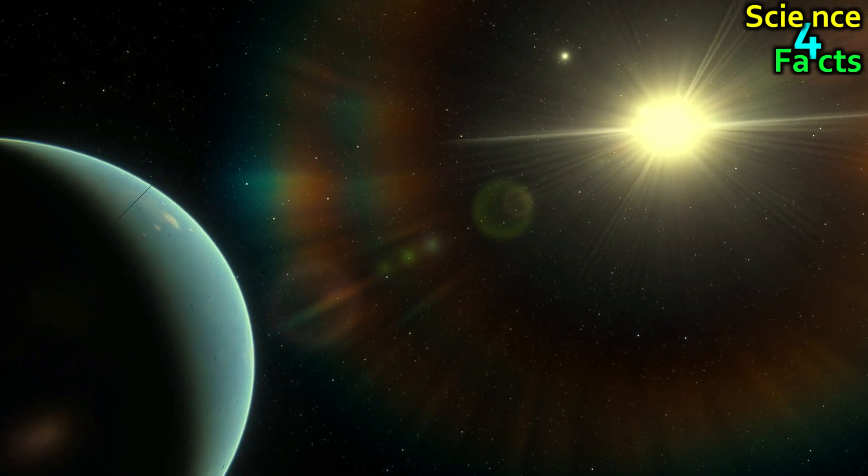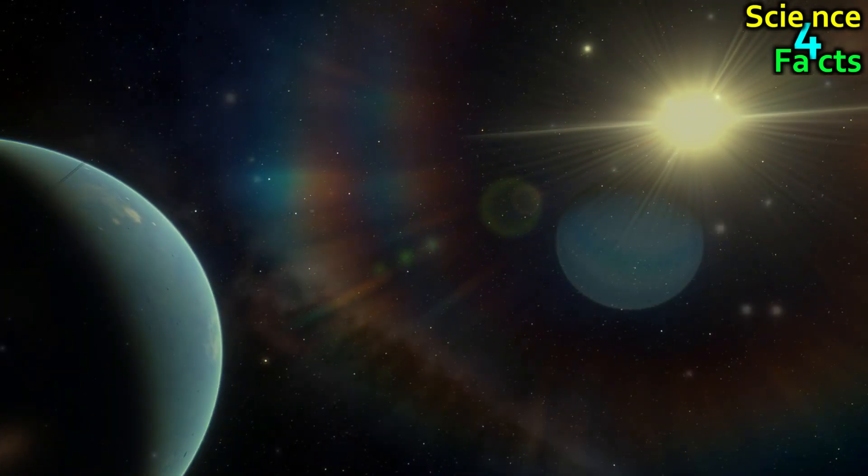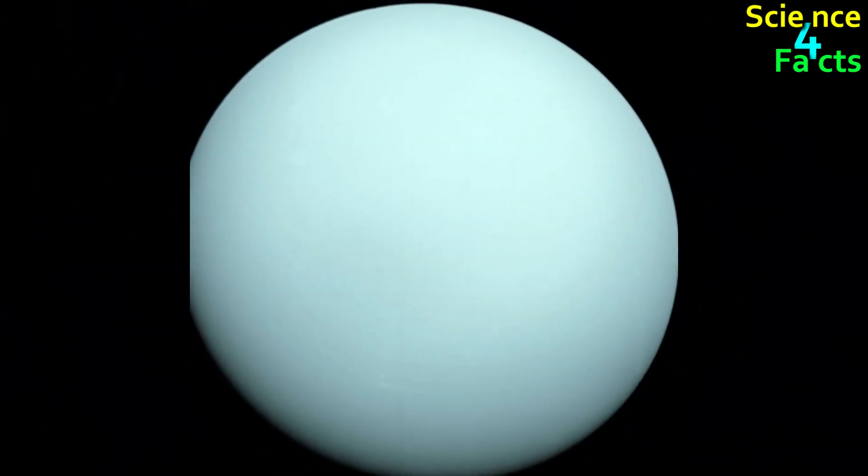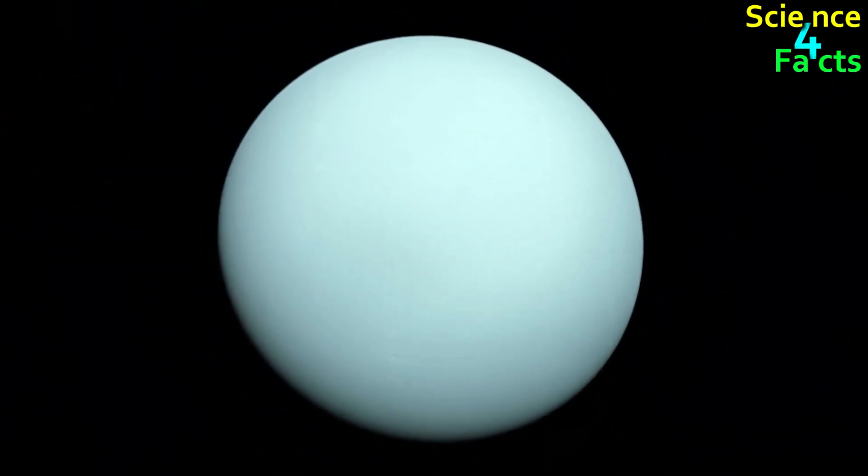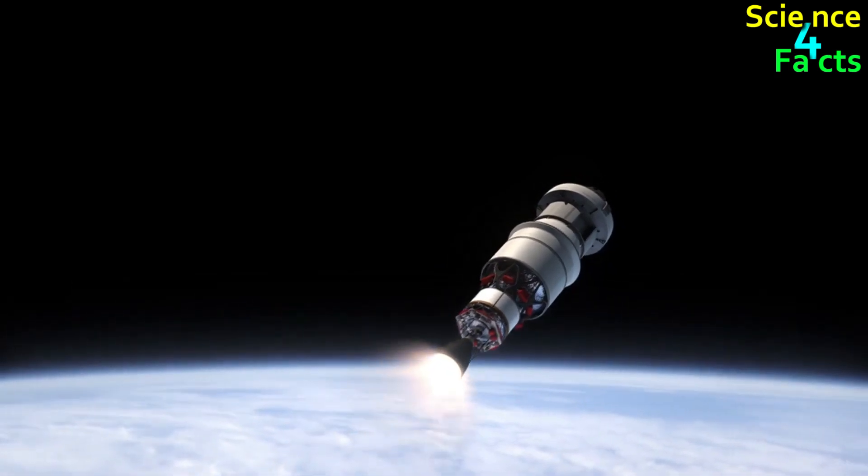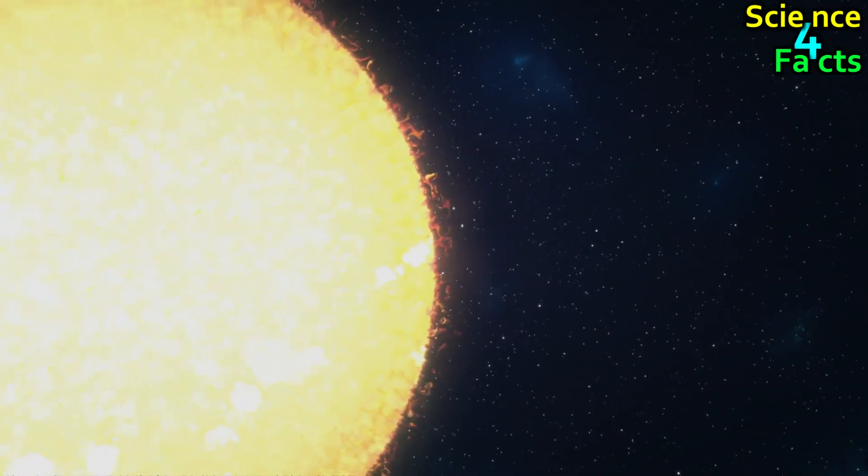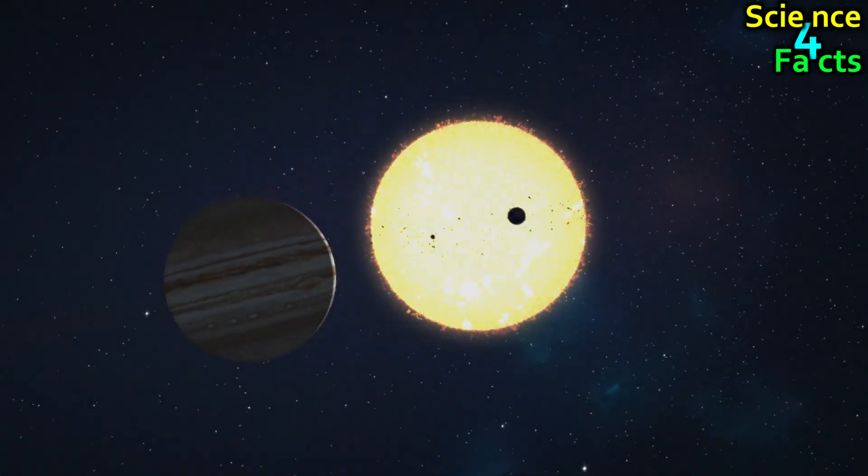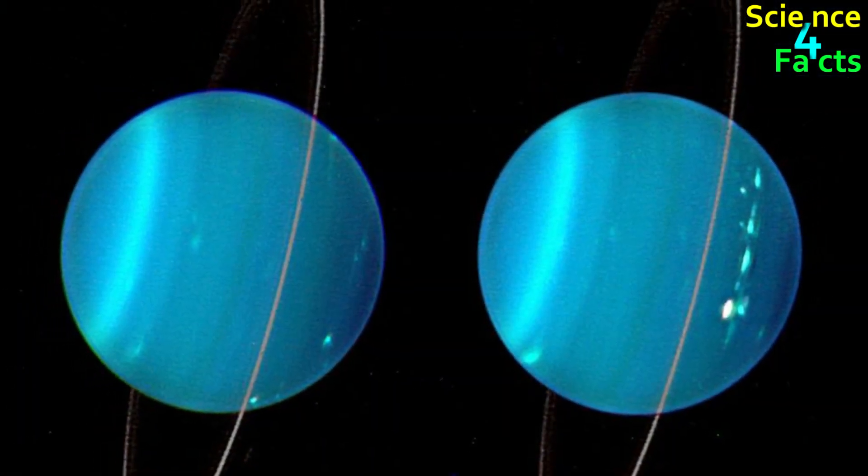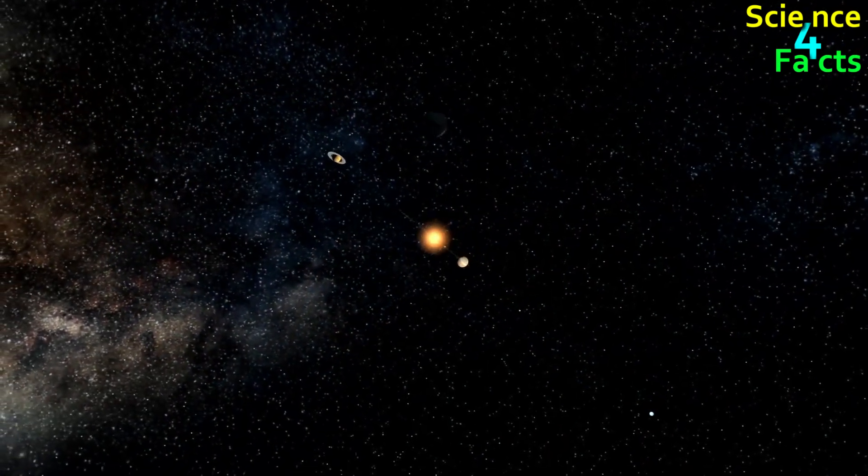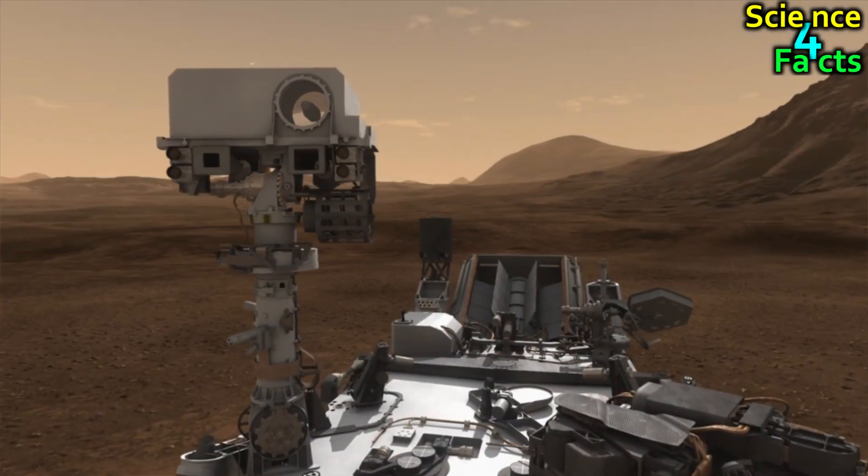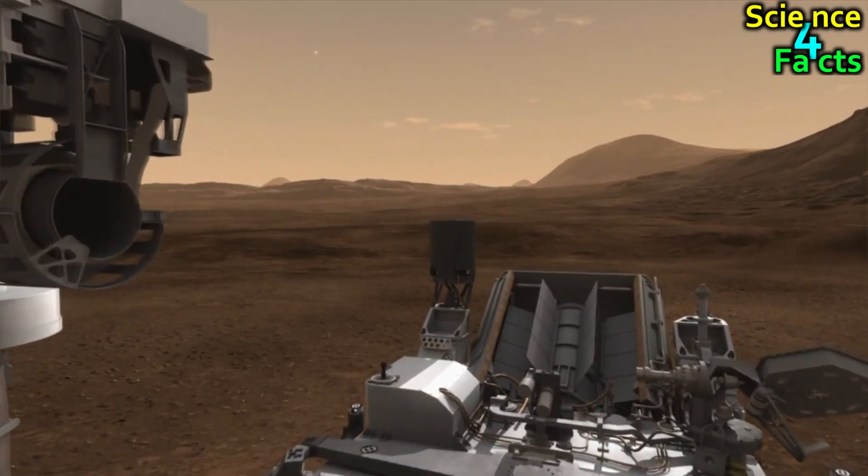While Uranus does not have a visible solid surface or any notable geological features, the unique properties of its atmosphere and axial tilt make it a fascinating and unusual planet to study. Exploring Uranus and sending spacecraft to study its surface and atmosphere is a complex and challenging endeavor. Due to its distance from Earth, it takes a significant amount of time and energy to reach Uranus, which makes it difficult to send spacecraft to study the planet in detail. Additionally, the extreme axial tilt of Uranus and its location in the outer solar system make it difficult for spacecraft to orbit the planet and study its surface. Furthermore, unlike rocky planets such as Mars, Uranus does not have a solid surface, so there are no land features to study.